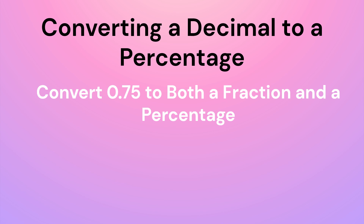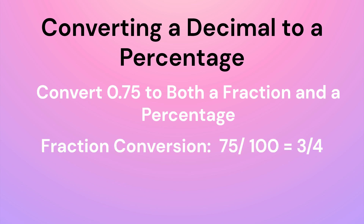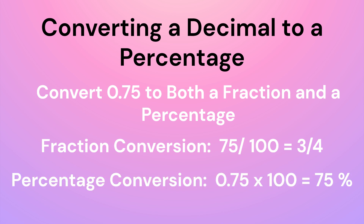Example: Convert 0.75 to both a fraction and a percentage. 0.75 is written as 75 hundredths, or 75/100. This simplifies to 3/4. For the percentage conversion: 0.75 multiplied by 100 equals 75, so 0.75 is the same as 75%.